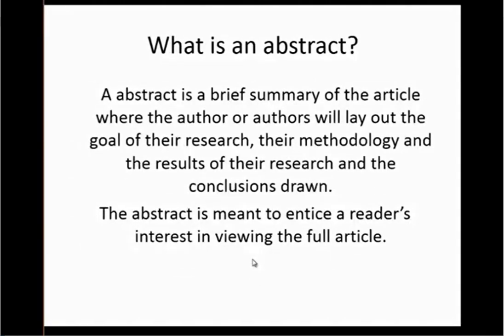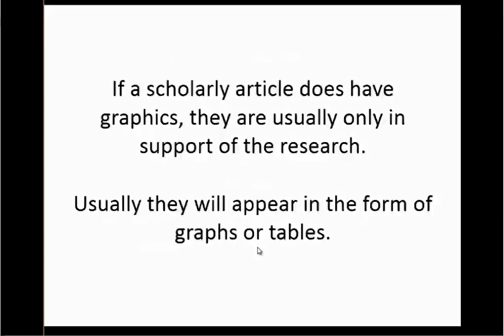Another way to identify a scholarly journal article is that it will have an abstract — a brief summary where the authors lay out the goal of their research, their methodology, the results, and their conclusions. The abstract is meant to help you decide if you want to devote time to reading the full article. Scholarly articles generally won't have many graphics or pictures, but when they do, visuals are used only in support of the research, such as graphs or tables depicting test results.